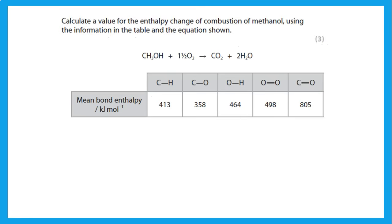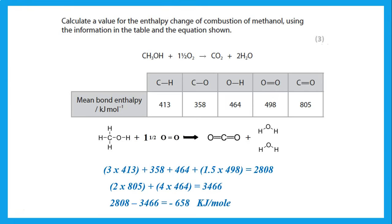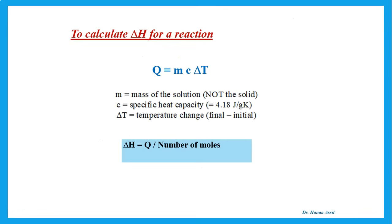To calculate the enthalpy change of combustion using bond enthalpies: count the bonds in the reactants — three C–H bonds, one C–O bond, one O–H bond, and one and a half O=O bonds — and the bonds formed in the products. Delta H equals bond enthalpies of reactants broken minus bond enthalpies of products formed, giving a value of −658 kJ/mol.